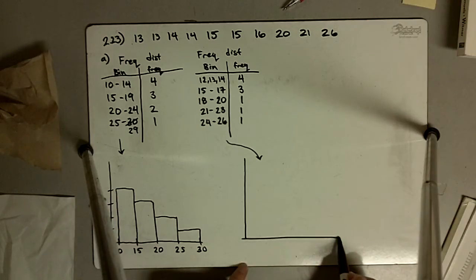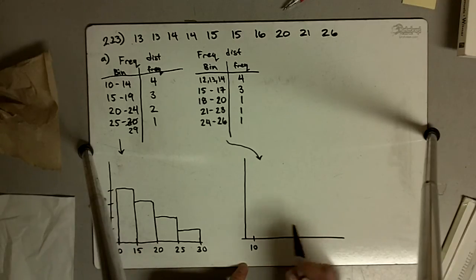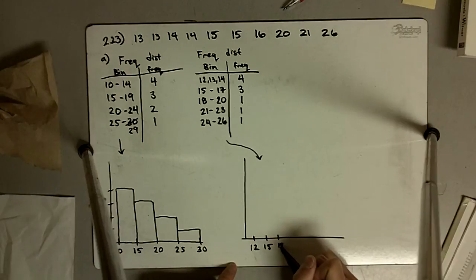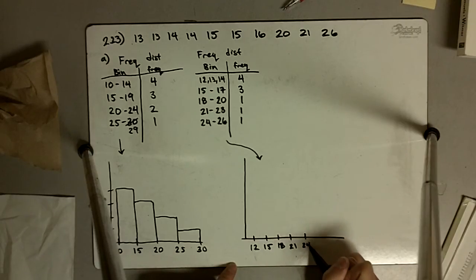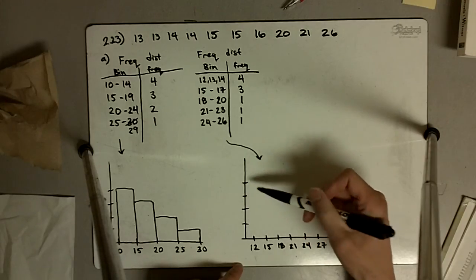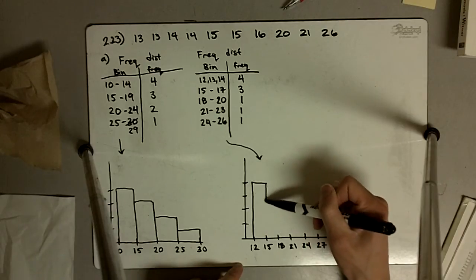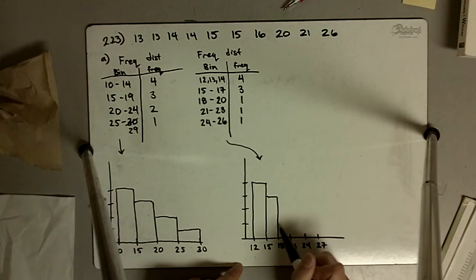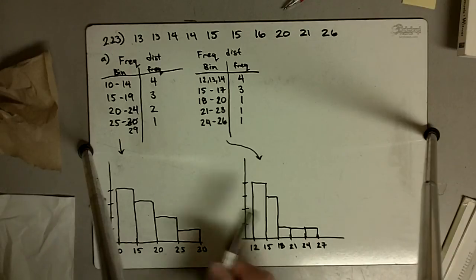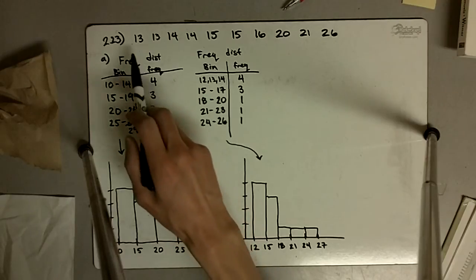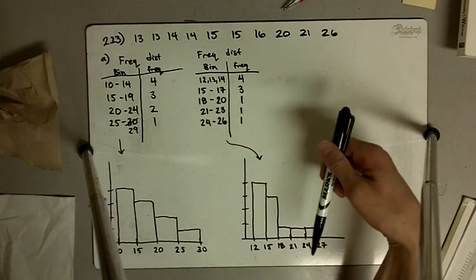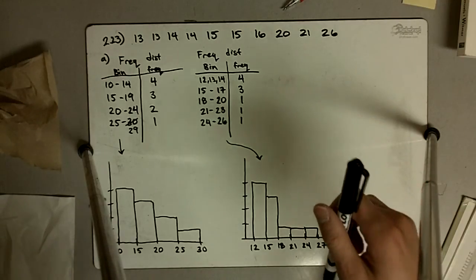For the second histogram, the bins are skinnier. The cutoffs are 12, 15, 18, 21, 24, and 27 — only three numbers in each bin. The frequency axis again marks 1, 2, 3, 4. This histogram shows four numbers in the first bin, three in the second, and then one number in each of the remaining bins. These histograms are graphic representations of the exact same data, but our choice of bin size has affected how they look — they are just different representations of the same data.